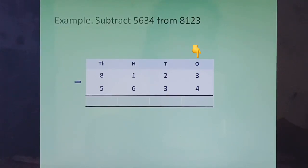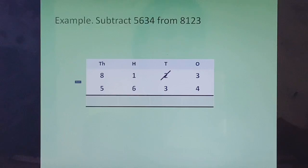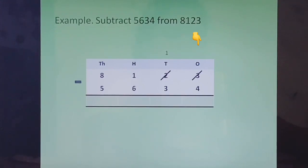Now students, if you have 3 chocolates, can you give 4 chocolates to somebody? You cannot. So from 3 you cannot subtract 4. You will have to borrow from the neighbor. The neighbor is 2 in the tens place. We will cut 2 and write 1 on top. That 1 from the tens column, when it comes to the ones column, becomes 10 ones. 10 ones plus 3 ones makes 13 ones. So we cut 3 and write 13 on top. 13 minus 4 is 9.